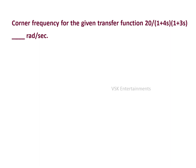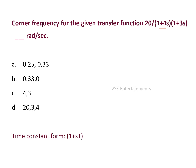Next question: the corner frequency for the transfer function 20 / [(1 + 4s)(1 + 3s)] is dash radians per second. Options are: 0.25 and 0.33; 0.33 and 0.4; 4 and 3; 20 and 3 and 4. To find the corner frequency we require the time constant form, which is a factor in the form of (1 + sτ). The corner frequency equals 1 divided by the time constant.